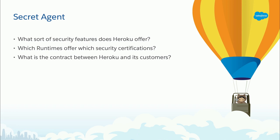We're also going to ask a lot of questions about security — what security features Heroku offers, and which runtimes offer which security certifications. There are three runtimes: common runtime, private spaces, and shield private spaces. For example, which do you deploy for PCI level one? And what is the contract between Heroku and its customers around security — for instance, if you sign a BAA with us, what does that mean?